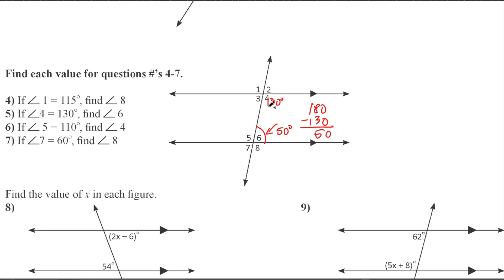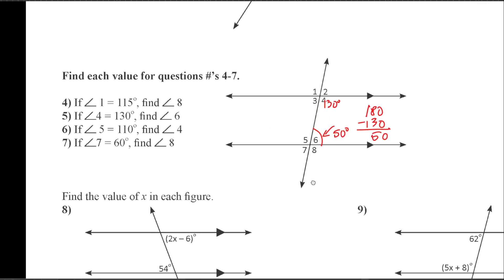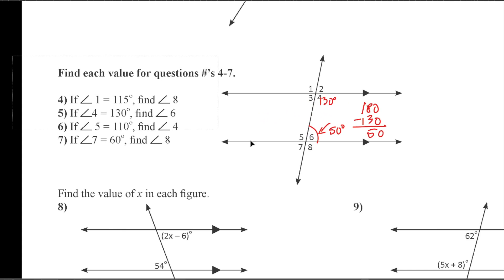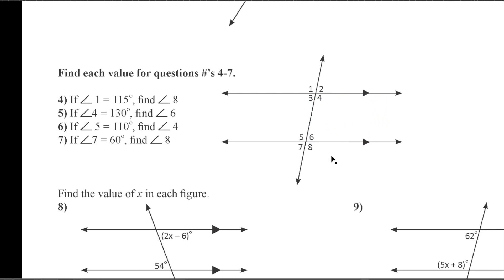Let's look at four and six. Angle four is 130 degrees. You've got to find angle six. Look at them and compare them. What's the relationship between angle four and angle six? They're supplementary — they add up to 180. The name is consecutive interior angles, which add up to 180. Is this helping, or is it a waste of time?